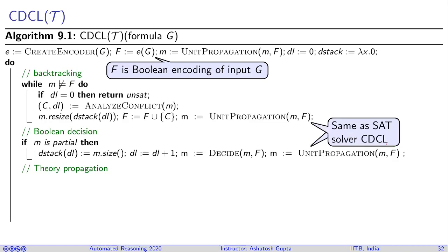Similarly, if you have a conflict—the current model does not satisfy your formula F—what do you do? You check how many decision levels you have. If it is zero, you declare unsatisfiable. Otherwise, you analyze the conflict to find the conflict clause and the new decision level to backtrack to. You resize your model, add this clause to your set of clauses in the formula, and do unit propagation.